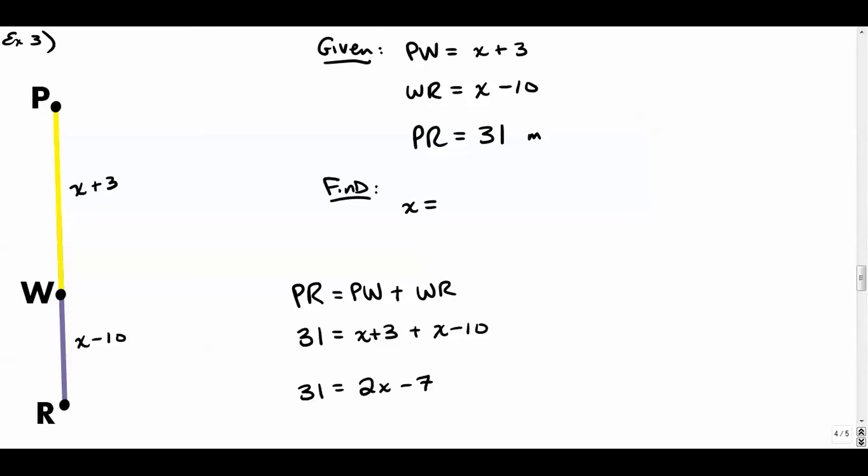So we're going to go 31 is equal to 2X minus 7. We'll combine like terms, combine constants. We're going to add 7 to both sides and get 38. And we're going to divide by 2. So X is 19.